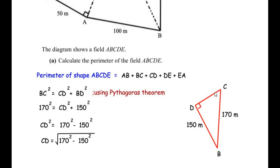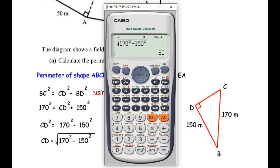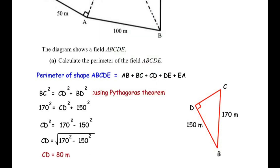Substituting the values: 170 squared equals CD squared plus 150 squared. Rearranging, CD squared equals 170 squared minus 150 squared. Taking the square root gives us CD equals 80. So the value of CD is 80 meters.